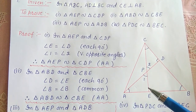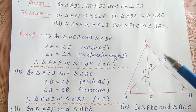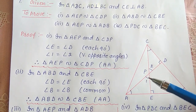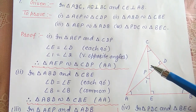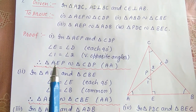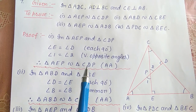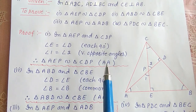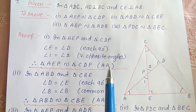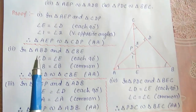For the first part, we have to prove triangle AEP similar to triangle CDP. Therefore, triangle AEP is similar to triangle CDP by the angle-angle criterion of similarity.